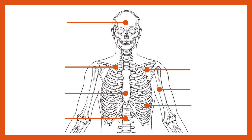Starting with the cranium, commonly called the skull, it is made up of a group of bones — about 22 in total — of different sizes, but essentially all flat bones for the most part, fused together to form a protective dome around the brain in particular.